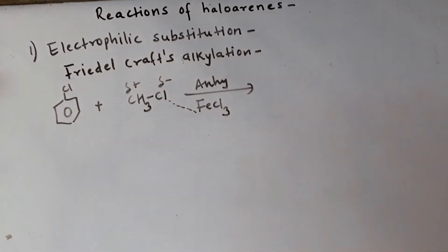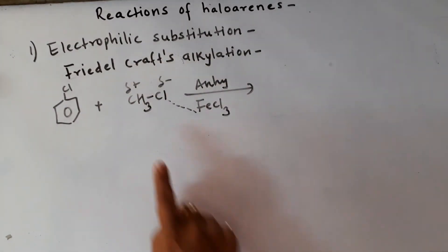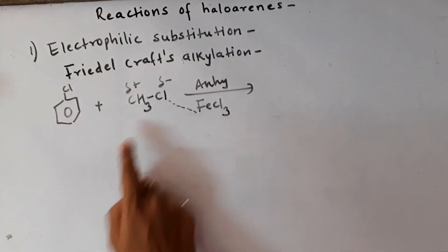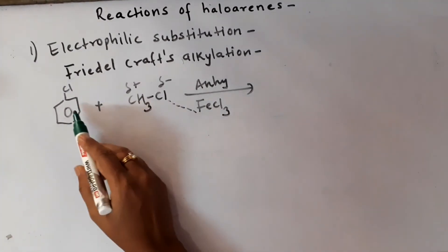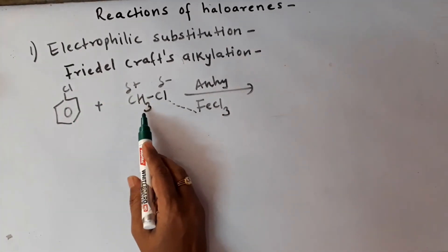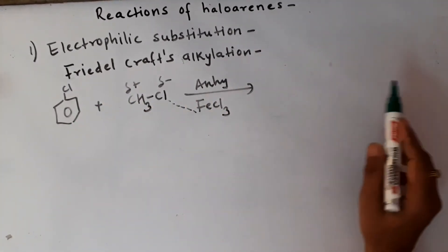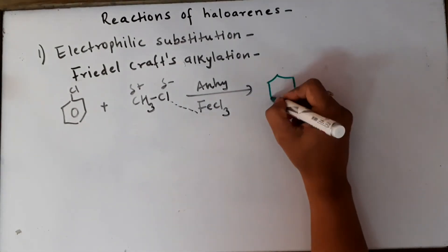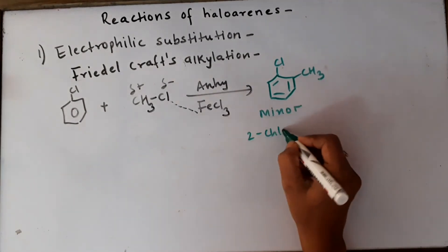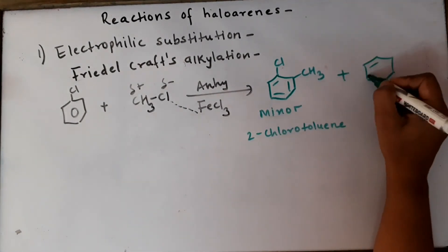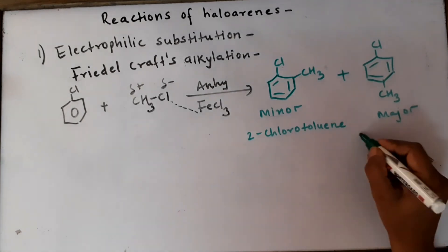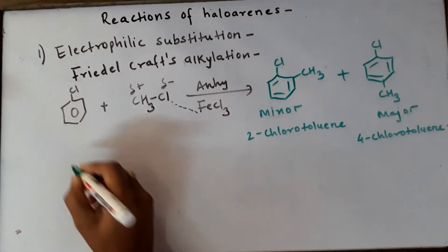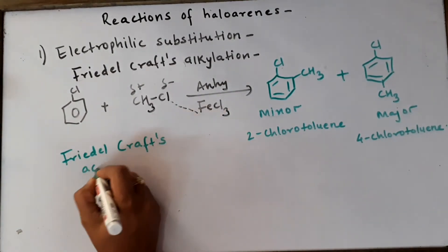The function of FeCl3 remains the same - it will help in polarizing the reactant to give you CH3+. In this manner we will be getting the ortho and para product. When ortho attack takes place we'll get ortho-chlorotoluene, and when para attack takes place we will get para-chlorotoluene. Here are the structures of those two compounds: 2-chlorotoluene and 4-chlorotoluene as a major product.